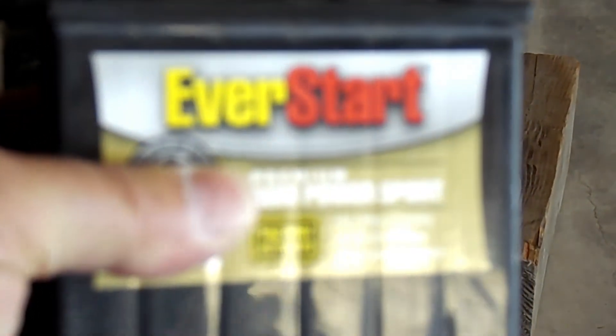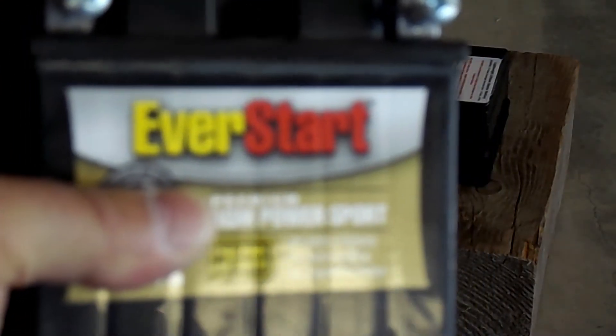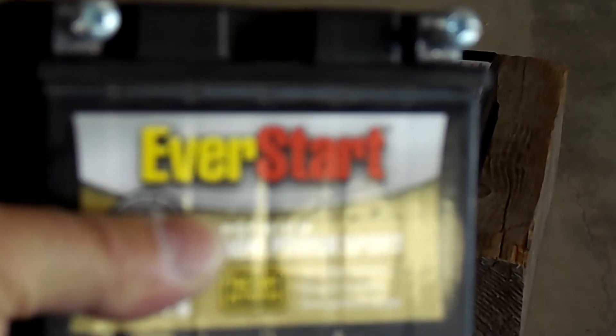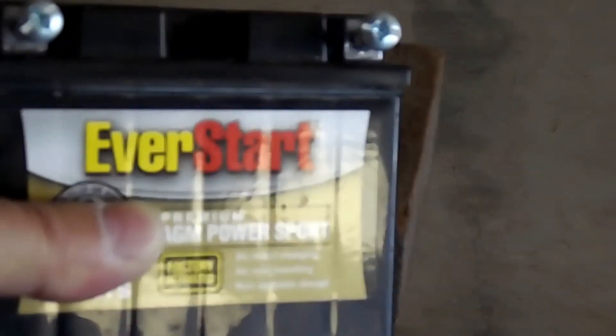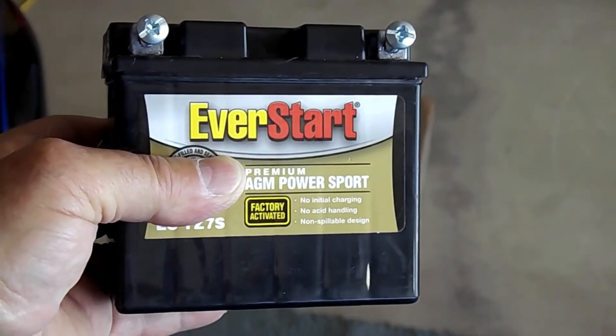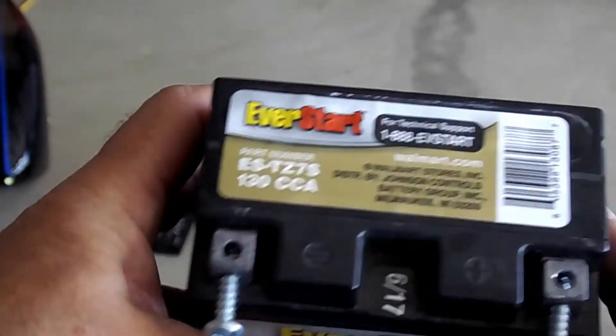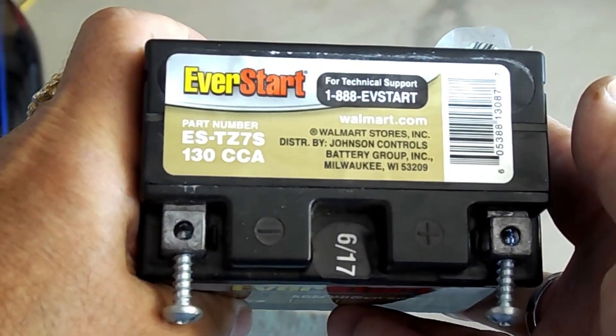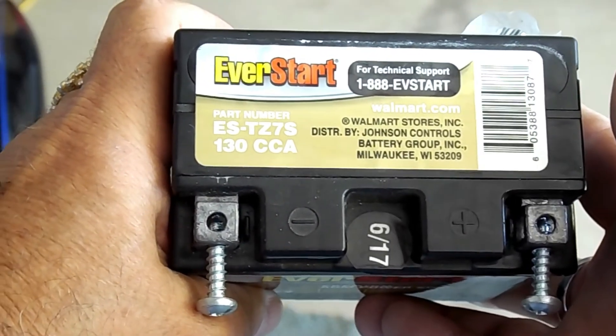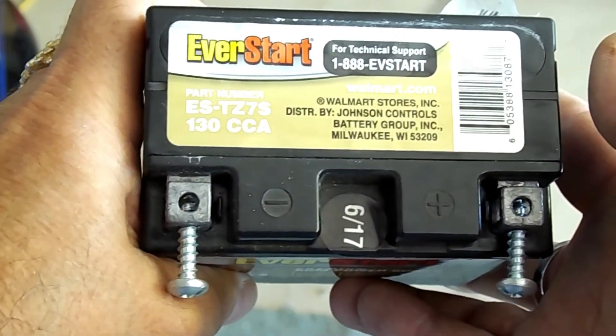Okay, this battery right here, let me see if I can get a better focus. Okay, that seems to be a little better. This is a Walmart battery, Ever Start sealed AGM. This is the info on top of it, it's 130 cold cranking amps. This battery started my airplane.